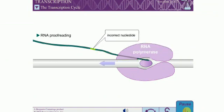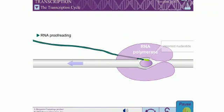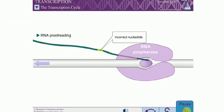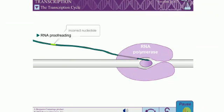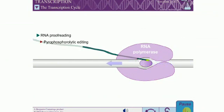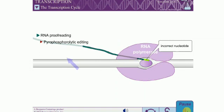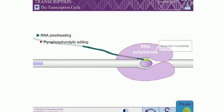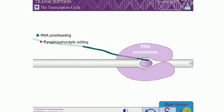The proofreading activity of RNA polymerase is less efficient than that of DNA polymerase, which only allows about one mistake per 10 million nucleotides. RNA polymerase has two proofreading mechanisms. The first mechanism is called pyrophosphorolytic editing, and involves a simple back reaction to catalyze the removal of an incorrectly inserted ribonucleotide. RNA polymerase slows down when an incorrect ribonucleotide is added, making removal of an incorrect base more likely than removal of a correct base.